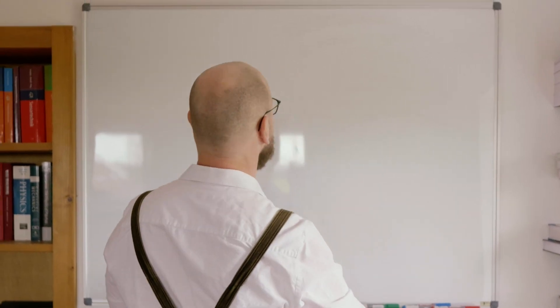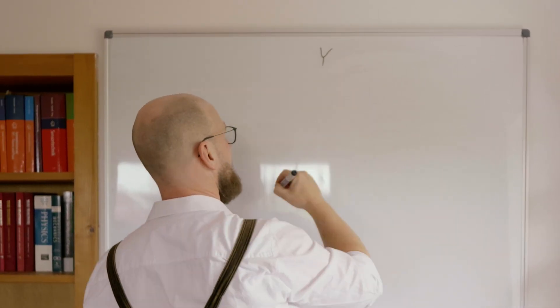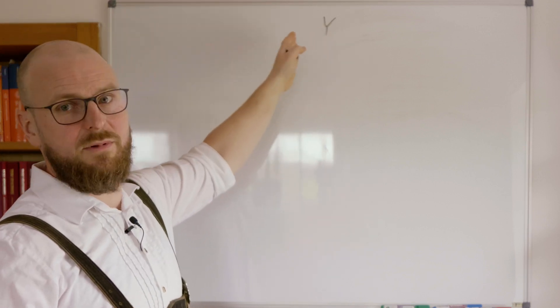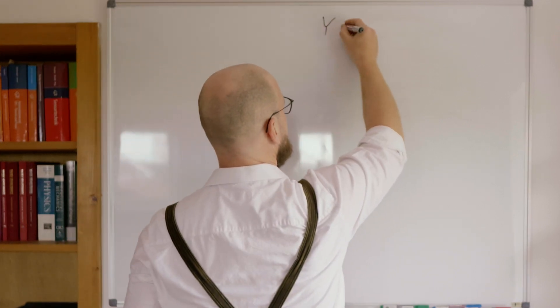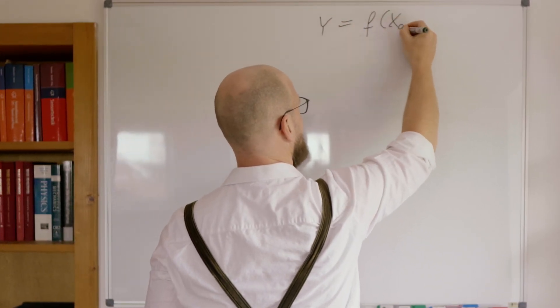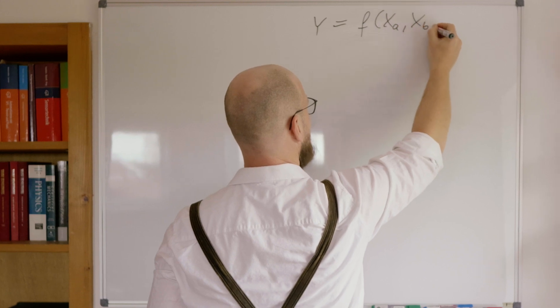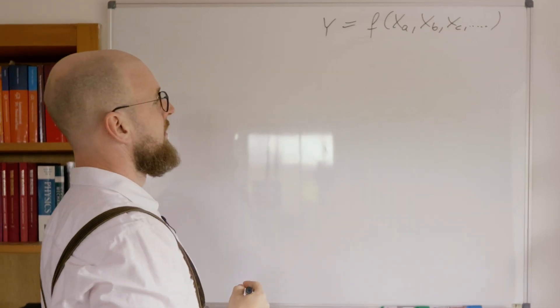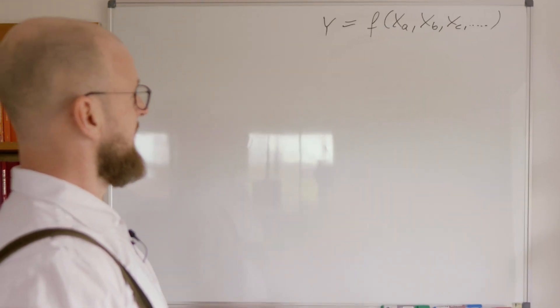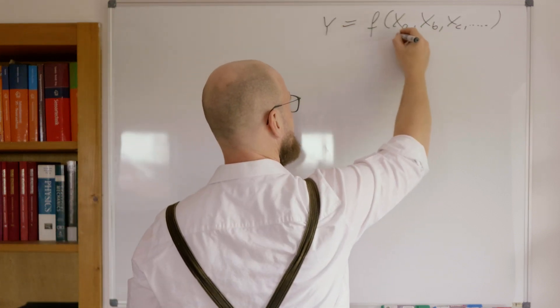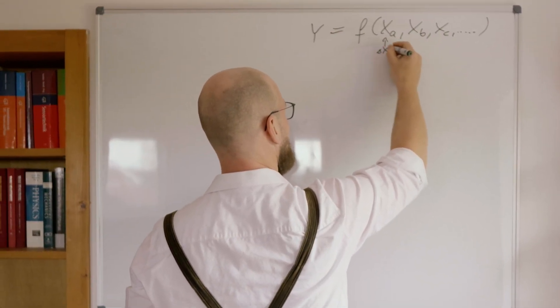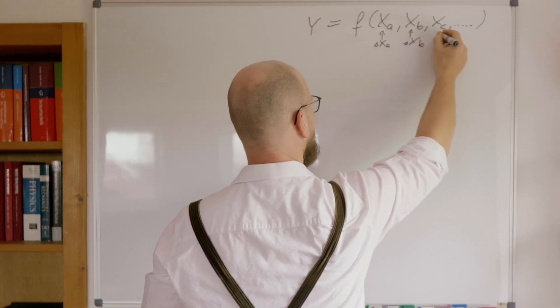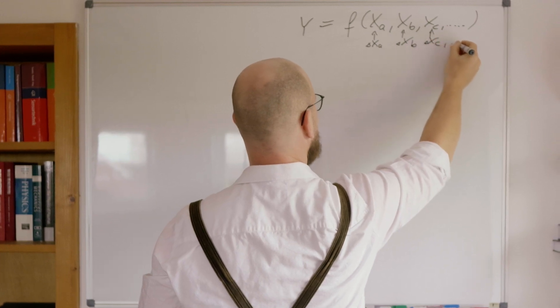let's wipe away everything. Our starting point shall be, we have a quantity Y. That's, for example, our R, or corresponding to our example, that would be the R, which is given as a function of different measurement values, xa, xb, and so on. Awesome. And now, those things over here all have errors, delta xa, delta xb, delta xc, and so on.